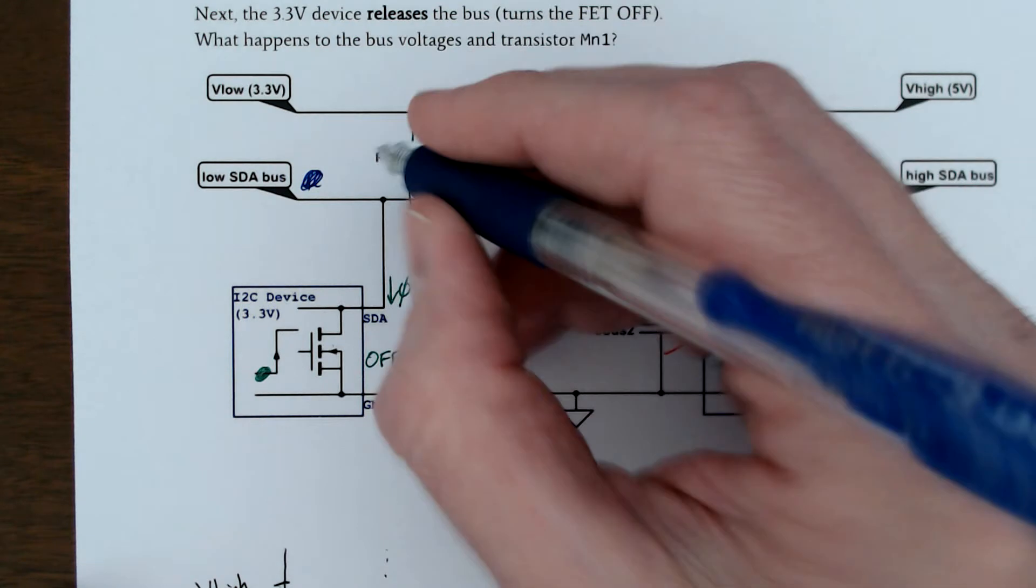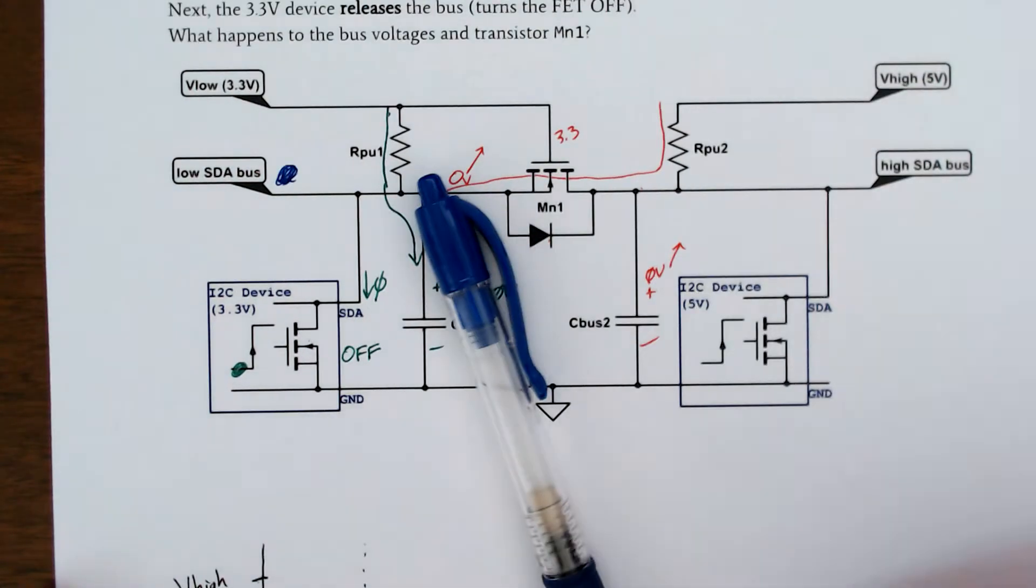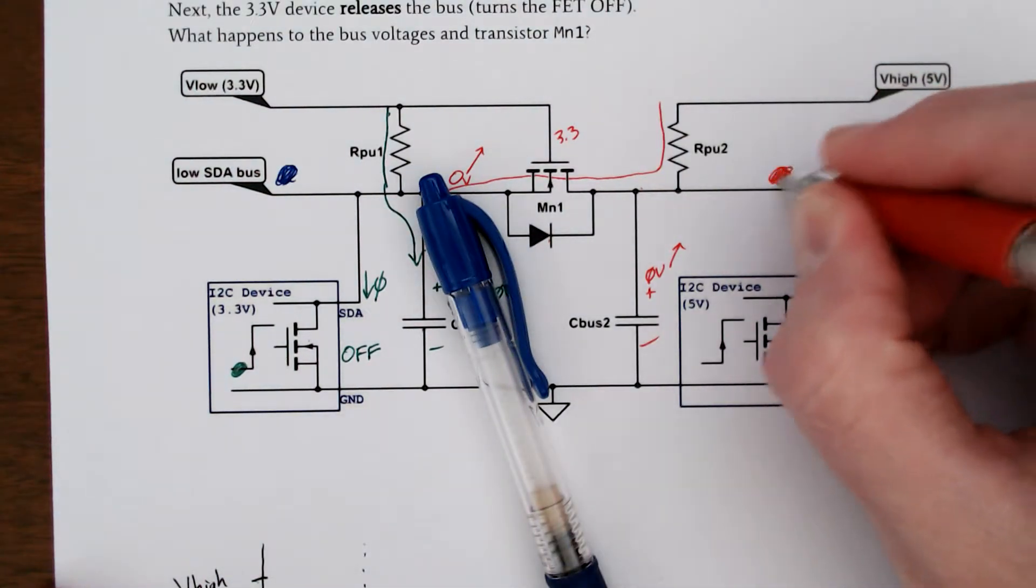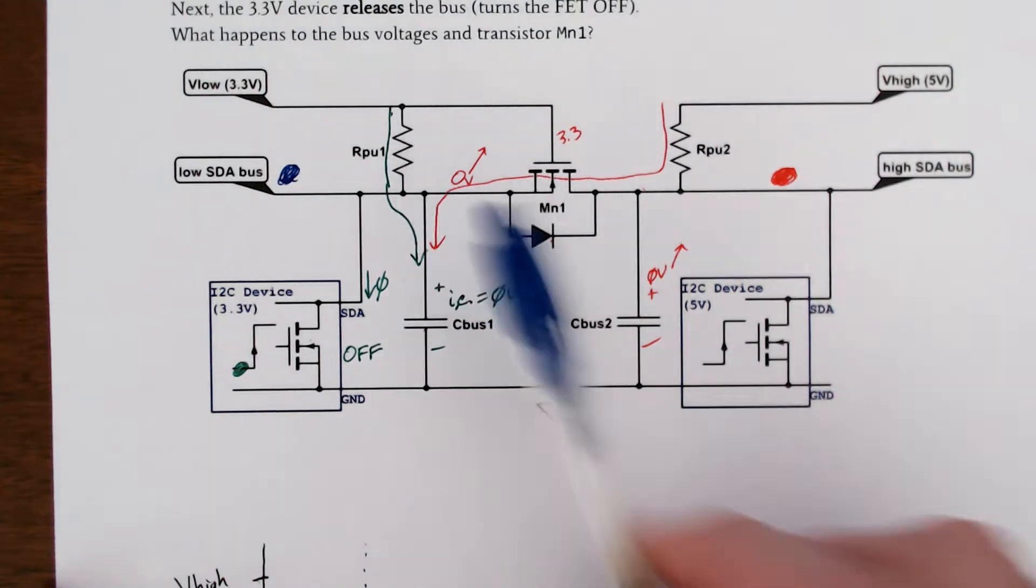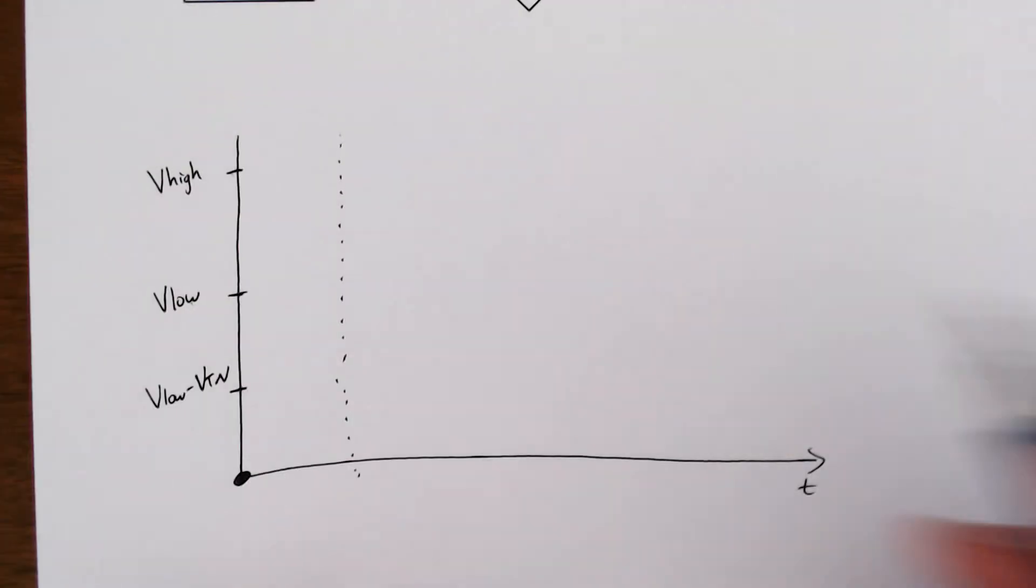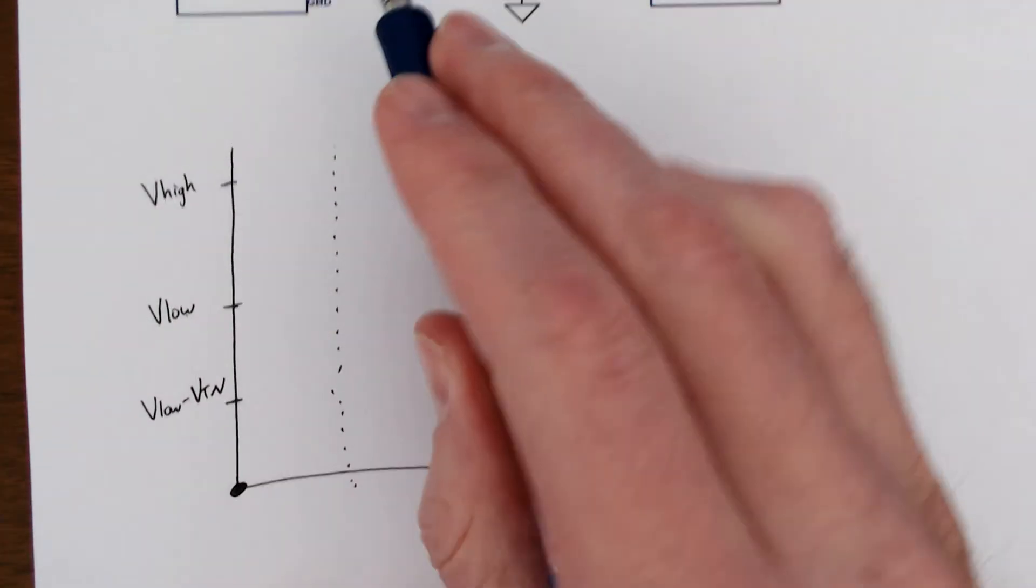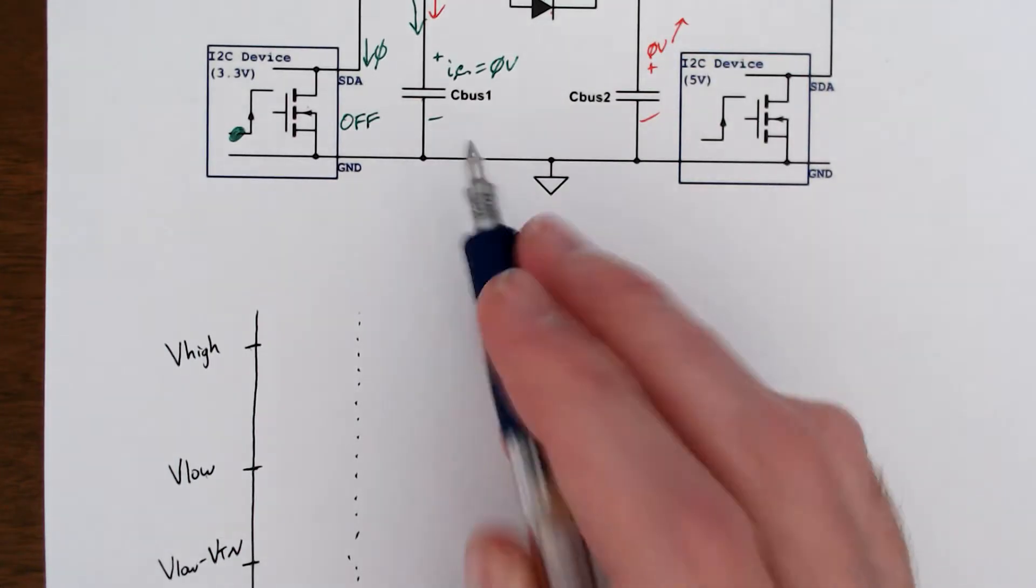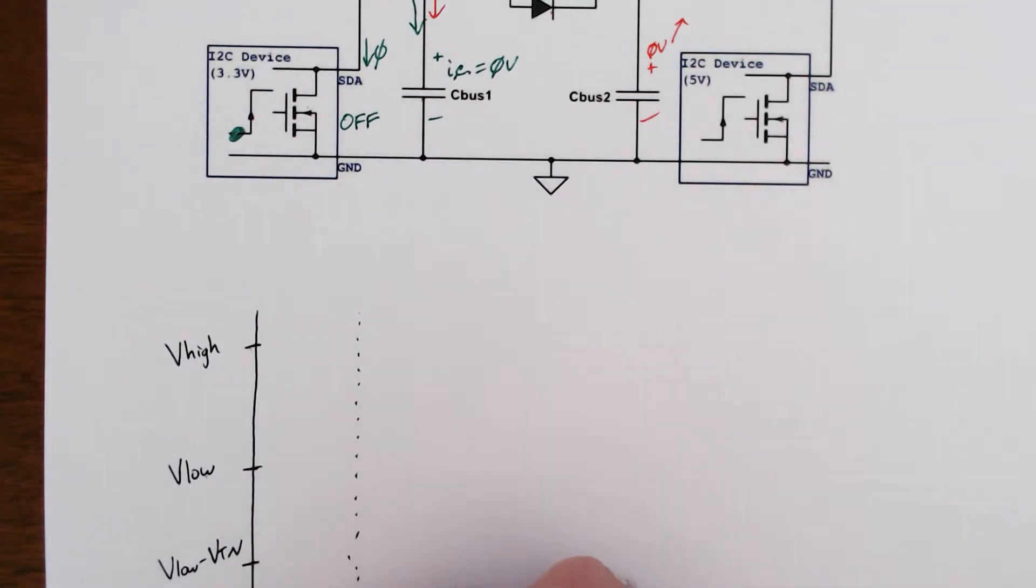Blue is going to be my low side, and red is the high side voltage. Let's look at what happens on the left side. We have our bus capacitor, it's charging up. It's going to charge up and come up.